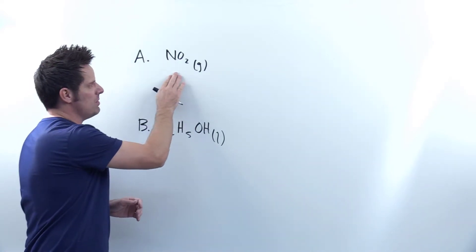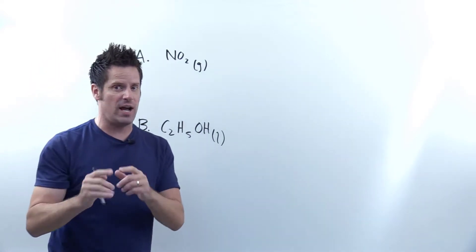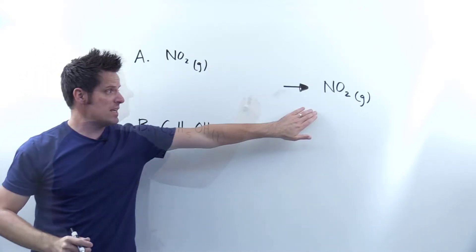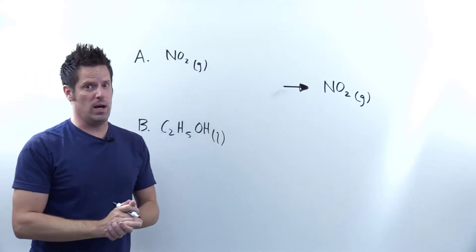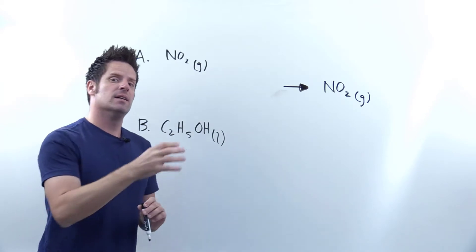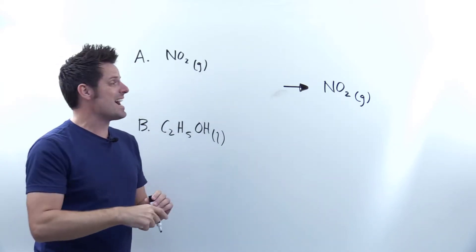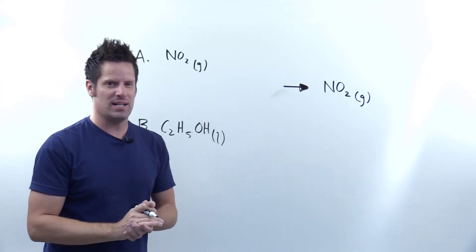We start by just writing down the compound that we are given on the right side of a reaction arrow, like this. That is step one. Be sure to write down the correct physical state, solid, liquid, or gas, or else you'll have the process incorrect.